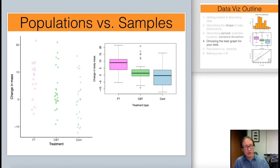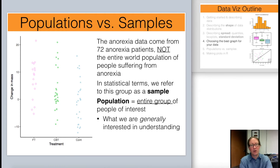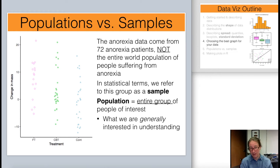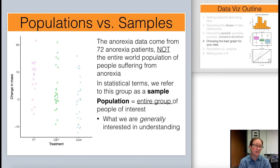Here are those anorexia data again, across those different therapy types. These data came from a total of 72 anorexia patients — they're not all of the people that have suffered from anorexia in the world. They're just a small subset of those people, so we're not studying the entire world population of people suffering from anorexia. In statistical terms, when you're only working with a subset of individuals, that group is referred to as a sample.